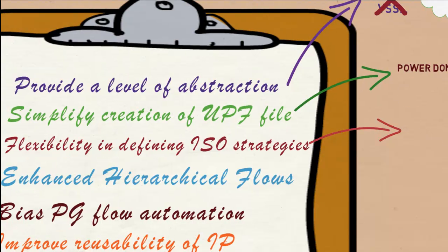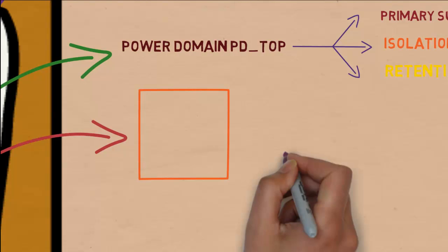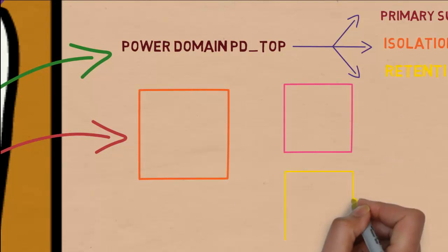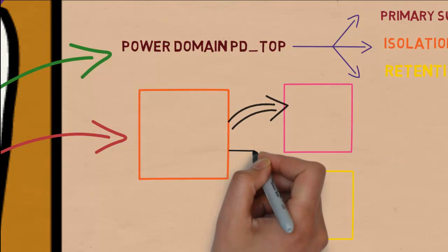Supply sets provides flexibility in defining isolation strategies. With this feature, when you want to define an isolation strategy between two specific power domains, you can use source and sync options instead of using a big list of elements.